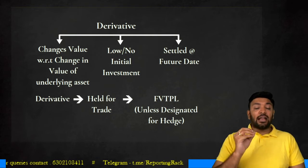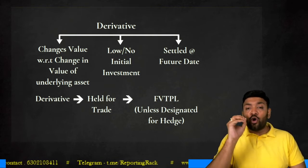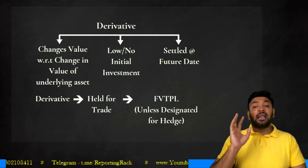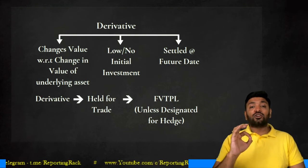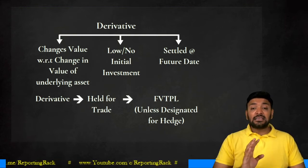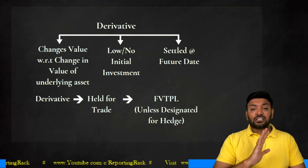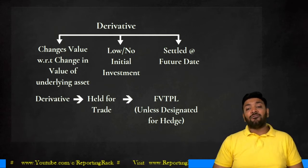Whenever I say derivative, these derivatives should always be treated as fair value through P&L — FTPL. You have no other classification for a derivative, be it a financial asset or a financial liability. They should always be treated as FTPL if the instrument is of a derivative nature. Such a derivative is always held for trading purpose, so it should always be designated as FTPL unless it is a hedging instrument. If it is a hedging instrument, we apply hedge accounting; otherwise, it should always be treated as fair value through P&L.